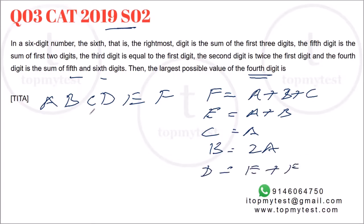Now, let's substitute these values. b is 2a, c will be equal to a. Which means f will become a plus b plus c, which means a plus 2a plus a, which is 4a. E will be equal to a plus b, which is 3a. And d will be e plus f, so 7a.